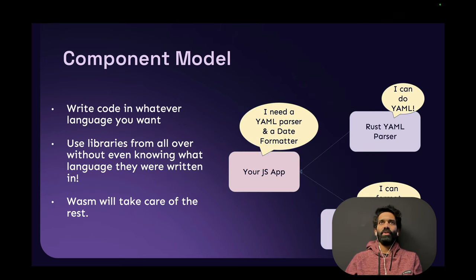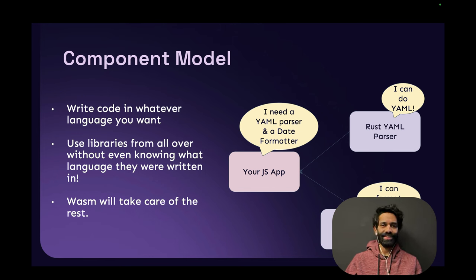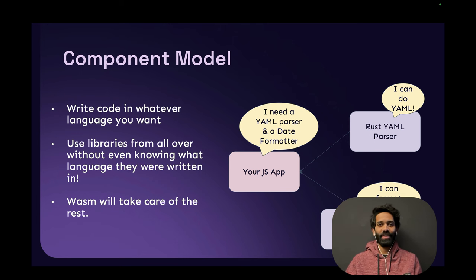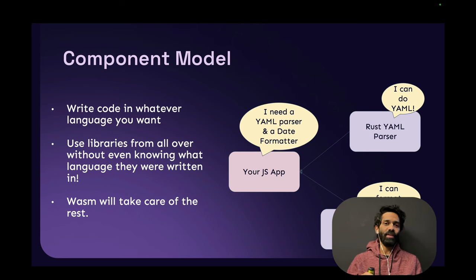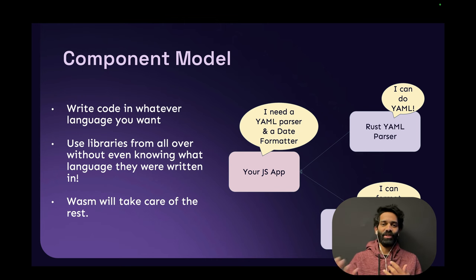Going back to that example, you can write code in whatever language you want and actually use libraries from all over without knowing what the other language really is, because of how WebAssembly works. Imagine writing a JavaScript app but using a YAML parser written in Rust and a date formatter written in Python, without really knowing how to write Rust or Python — honestly without even caring that it is written in Rust or Python. As long as your YAML is parsed and your date is formatted correctly, your JS app will run. That's what the component model unlocks.